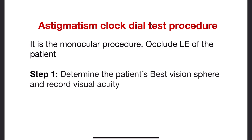The procedure of the astigmatic clock dial test is a monocular procedure, so you have to occlude the other eye of the patient. The first step is to determine the patient's best vision sphere and record the visual acuity. The best vision sphere is the spherical lens which gives the maximum visual acuity to the patient.